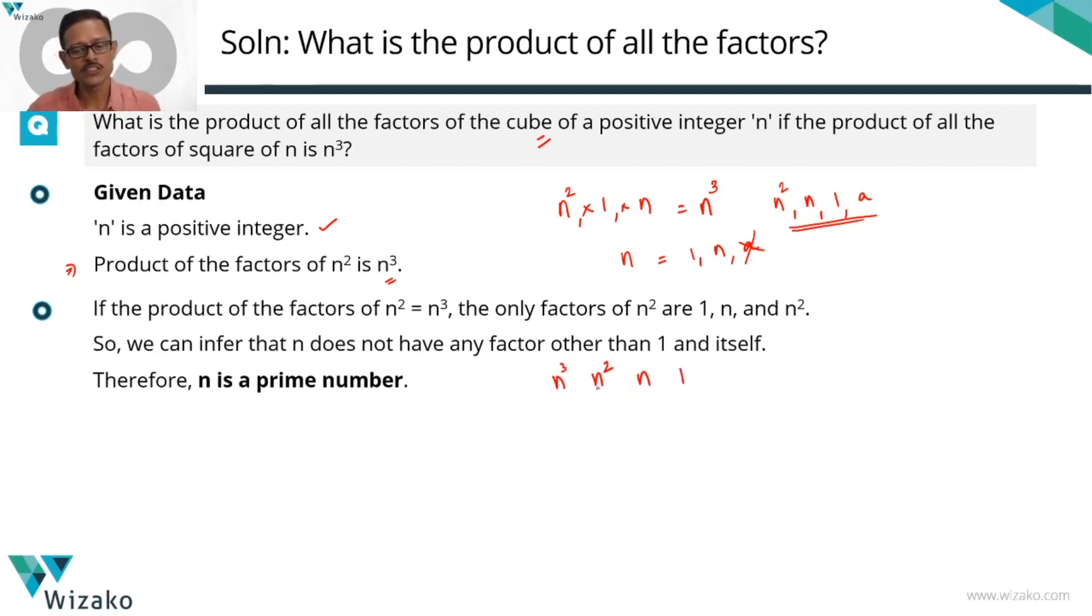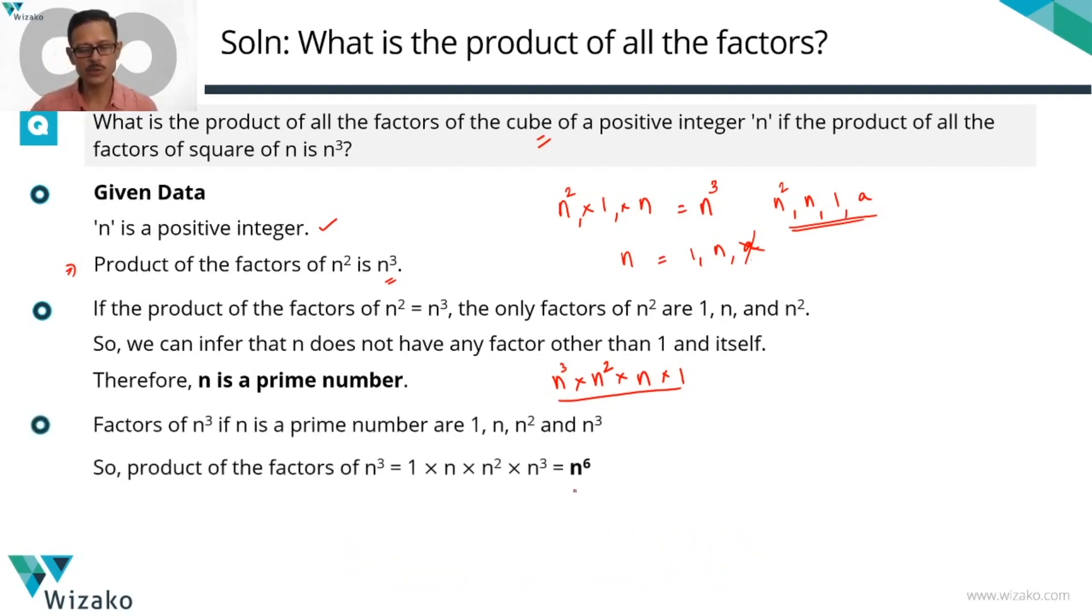Because n is a prime number, n square will not have any factor other than 1, n and n square. n cube is going to have all of these subpowers of it as the factors and cannot have any other factor. So these are all the factors of n cube. The product of all of these factors is therefore going to be equal to n cube times n square times n times 1 which is equal to n power 6. Choice B is the correct answer.